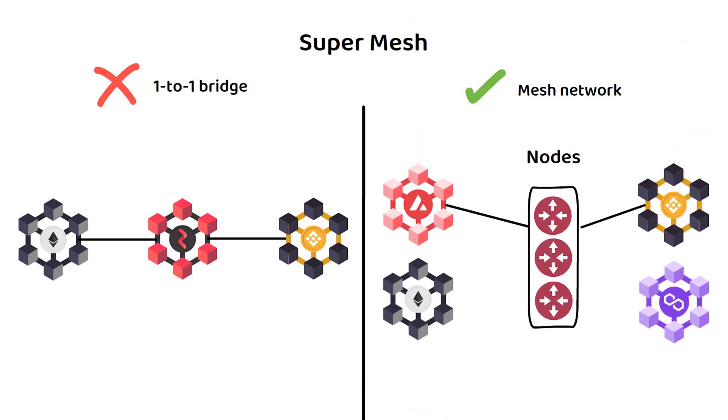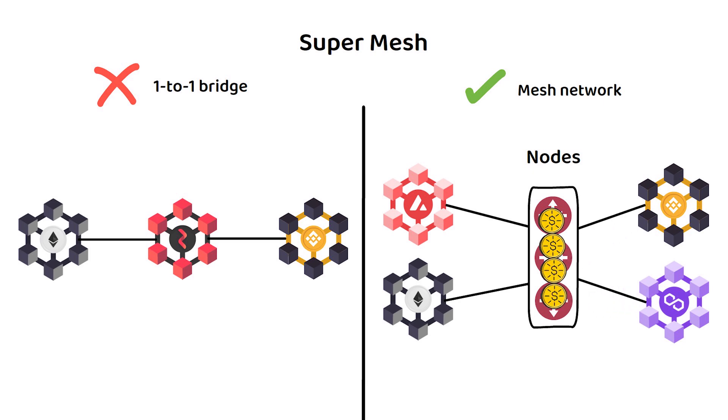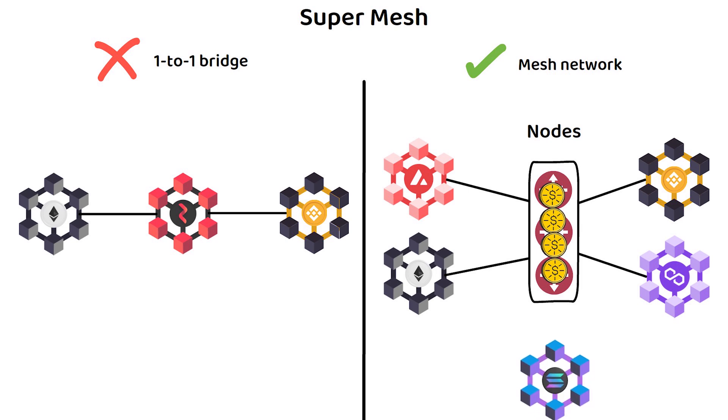The result is a network that can listen for inbound transactions across all chains in the mesh. Because it is not a one-to-one bridge, new networks can be added to the supermesh by having their networks configured to the Router Protocol nodes.